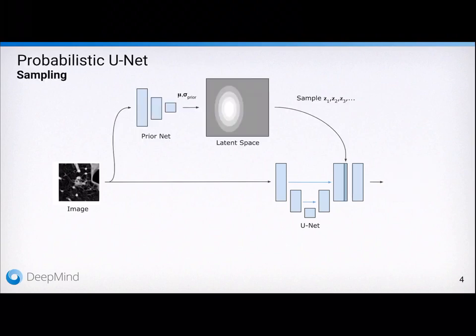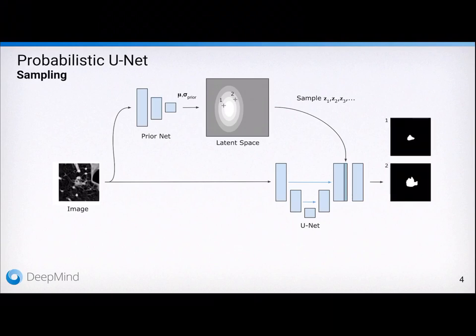In order to model distributions over segmentations, we propose the probabilistic U-Net. At inference time, it employs a prior net conditioned on the image to predict a distribution over a low-dimensional latent space. Samples from this latent space are concatenated with activation maps from the segmentation net and processed further so as to produce consistent segmentations for each such sample.